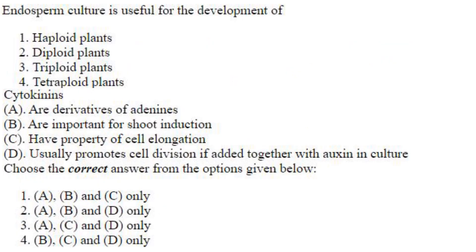Endosperm culture is useful for the development of triploid plants, because endosperm is 3N — it is triploid. Answer is option 3.